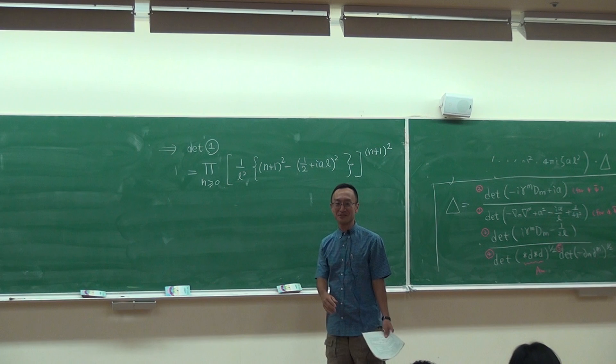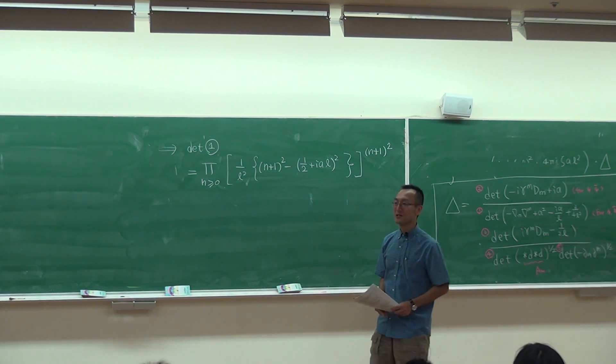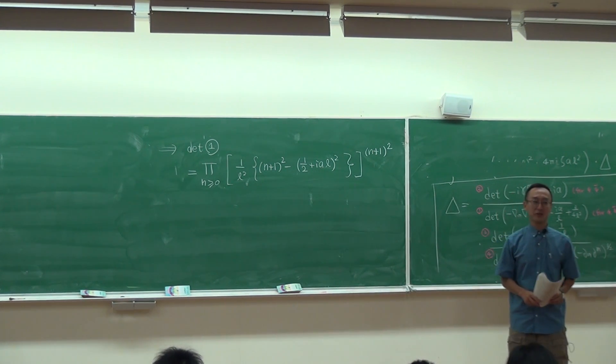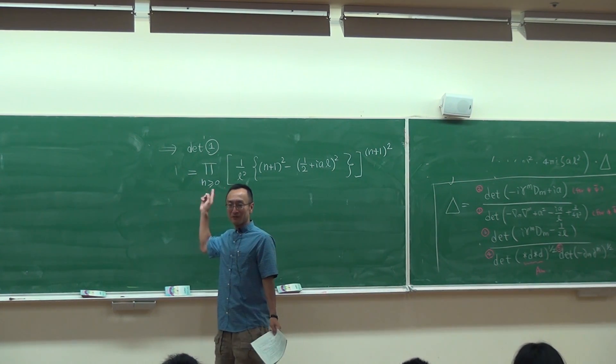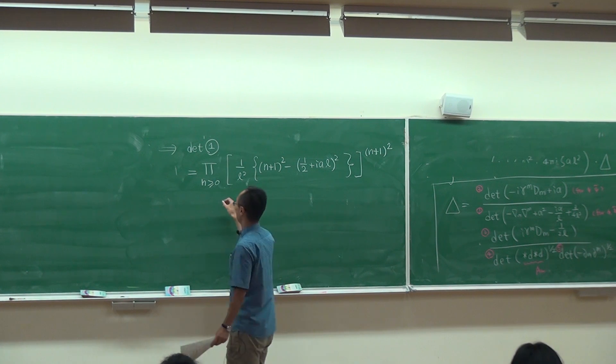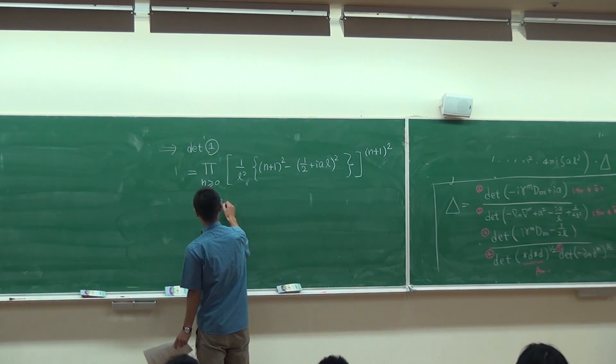Usually a physicist uses what is often called zeta function regularization. Whenever I write some formula like this, I always accept zeta function regularization.